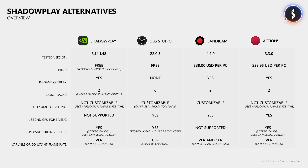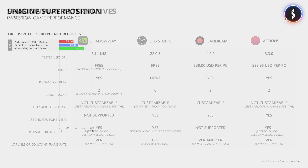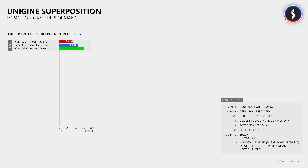Now, how many FPS do you lose when you record your gameplay with the latest version of these applications? To find out I repeated the same tests again with the Unigine Superposition benchmark. With all recording tools disabled and the benchmark running in exclusive fullscreen mode, I got a minimum frame rate of 88.46, an average of 116.05 and a maximum frame rate of 152.03.